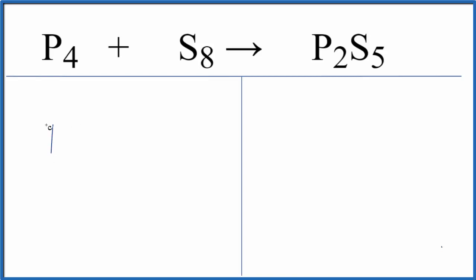Let's count the atoms up. We have phosphorus, and we have four of those. Sulfur, we have eight. On the product side, we have two phosphorus atoms, and we have five sulfur atoms.